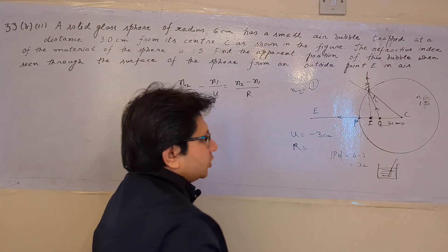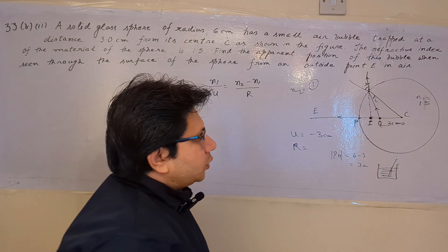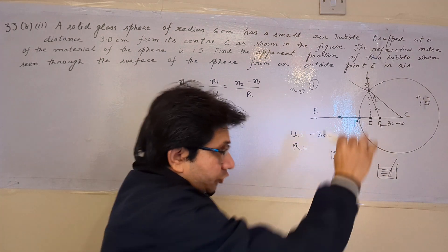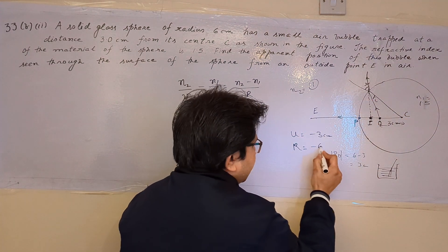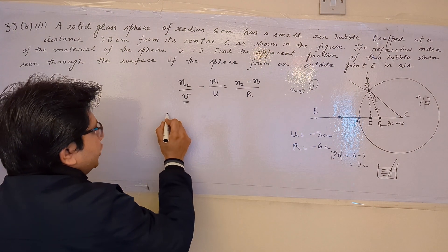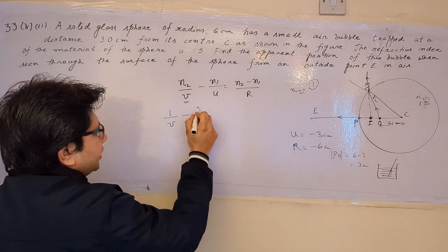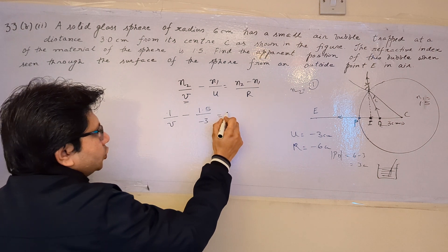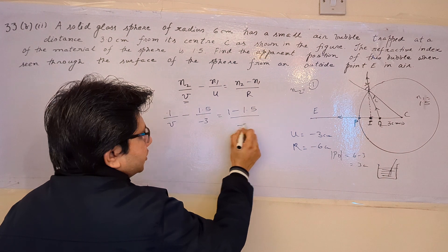Similarly, for R, the radius of curvature is in the rightward direction, which is against the direction of the incident light (right to left). So R is also negative, which is minus 6 cm. Substituting these values: N2 is 1, so 1/V; N1 is 1.5, U is minus 3; and on the right side, (1 minus 1.5) divided by R which is minus 6.